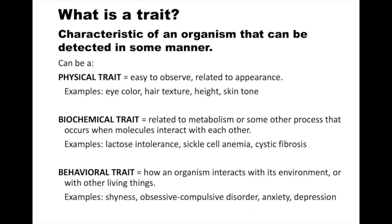Behavioral traits can be a little bit more complicated. They explain how an organism — meaning a living thing — would interact with its environment or with other living things. Shyness, obsessive compulsive disorder, anxiety, depression — these may have some genetic component and they may also have some environmental component. If something really bad happens to you, you might have anxiety from it or feel depressed. So behavioral traits can be partly genetic, but also can be part of experience.